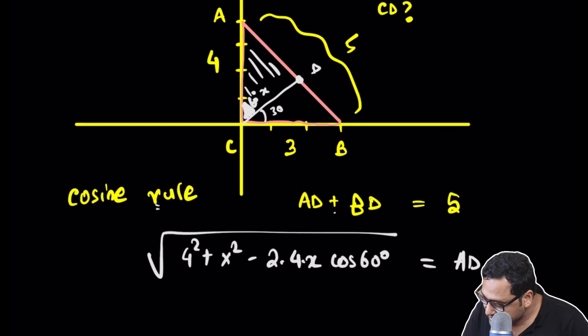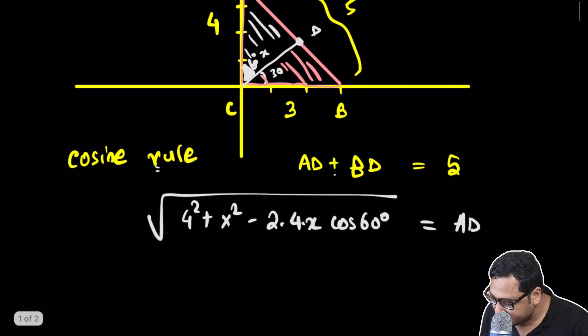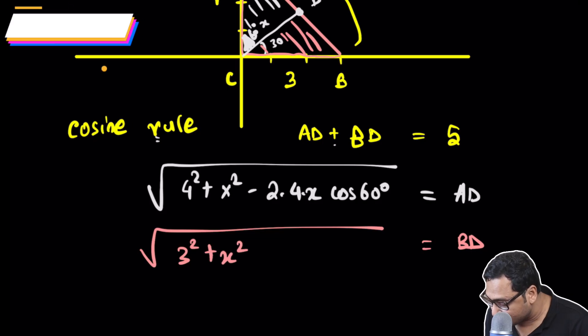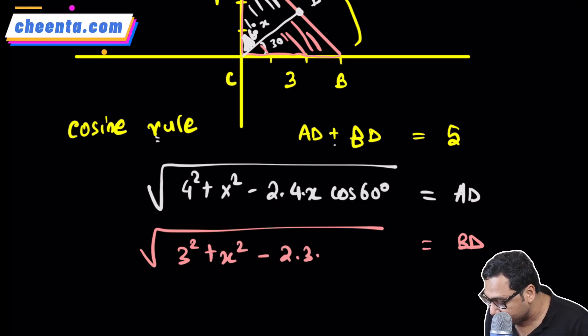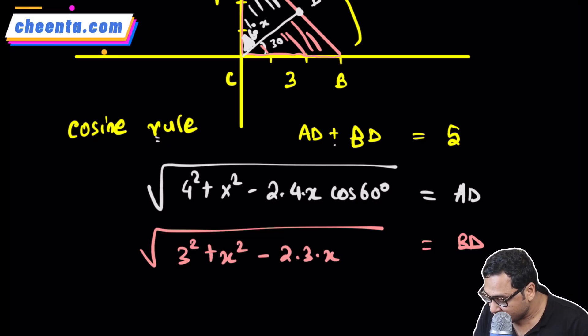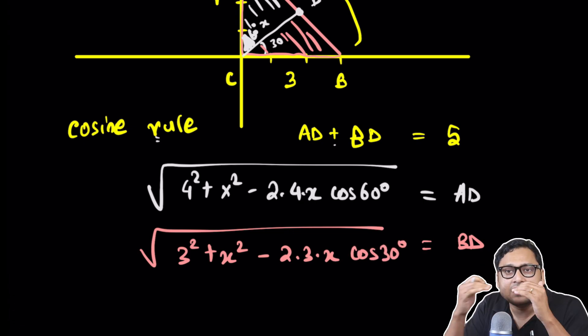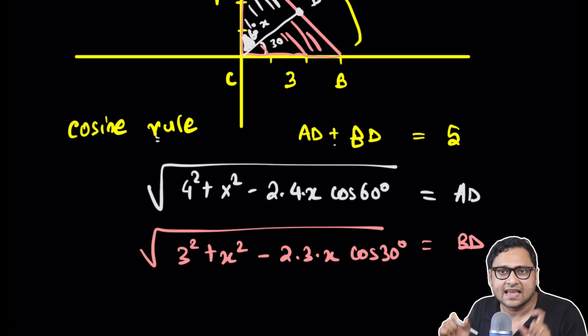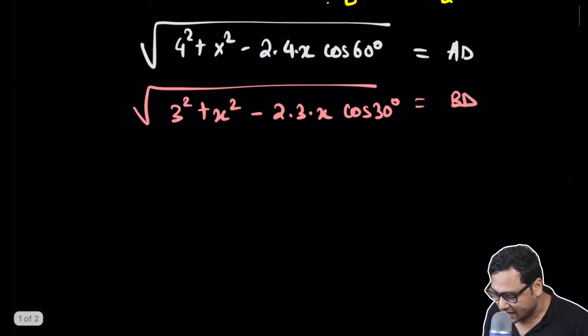And what is BD? I will use the cosine rule in this triangle. BD is square root of 3 squared plus X squared minus 2 into 3 into X cosine of 30 degrees. I will add these two equations and equate it to 5.